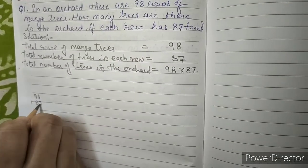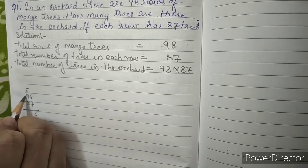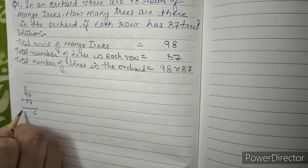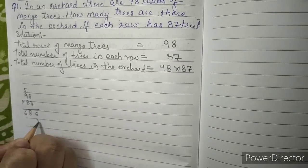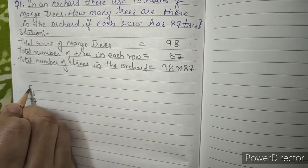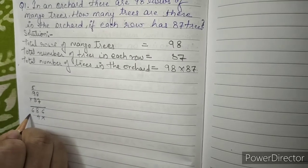98 into 87. So 7 eights are 56, we'll write 6 carry 5. 7 nines are 63, 63 plus 5 is 68. Now 8 eights are 64, we'll write 4 carry 6. 8 nines are 72, 72 plus 6 is 78.